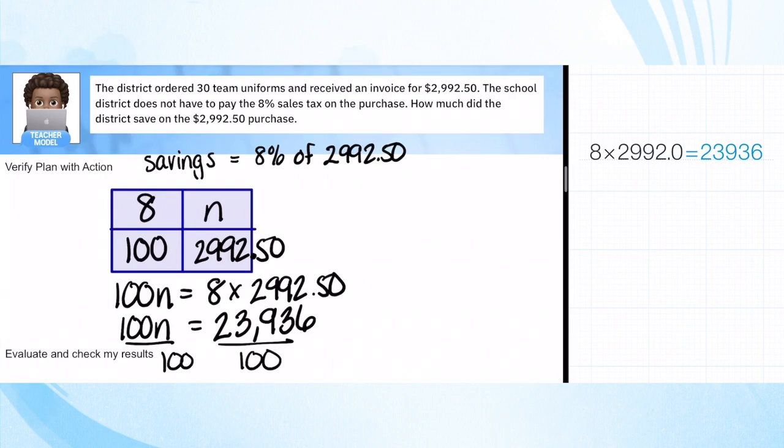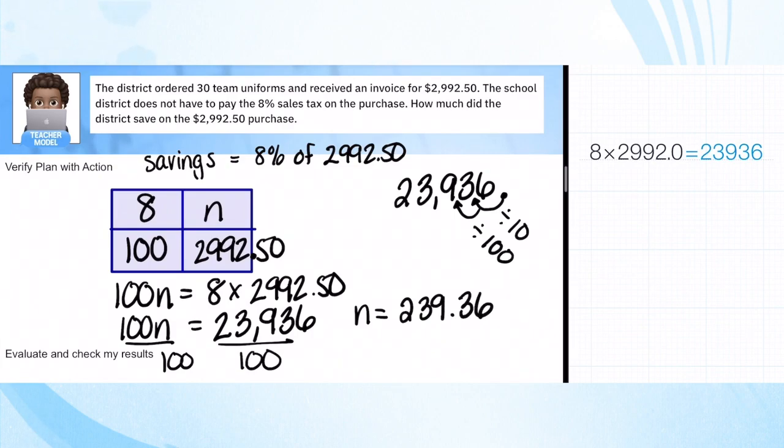We're going to divide both sides by 100. Even though I have my calculator, I won't actually need it for this. When I want to divide a number by 10, I take this decimal and move it one time to the left. If I move it two times, it's the same as dividing by 10 times 10, or 100. So the taxes are equal to $239.36. If you're still unsure, we can verify: 23,936 divided by 100. There you go, $239.36.